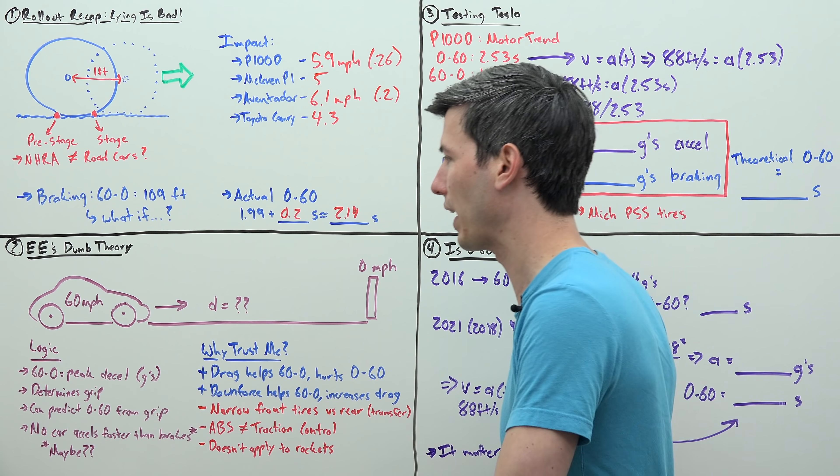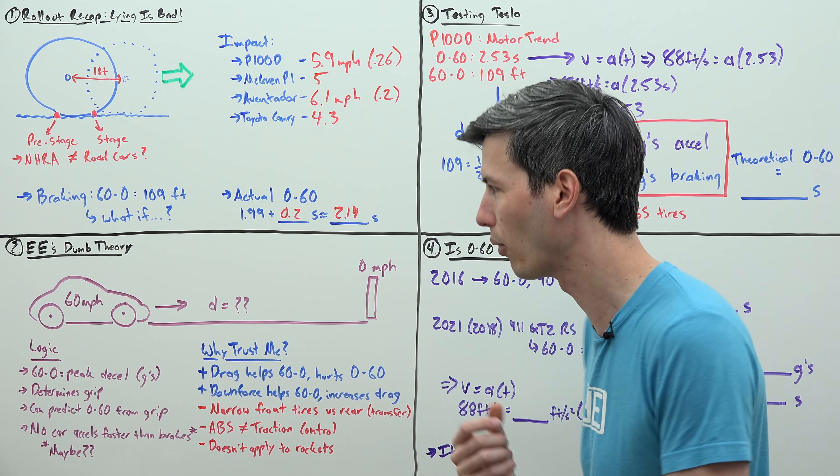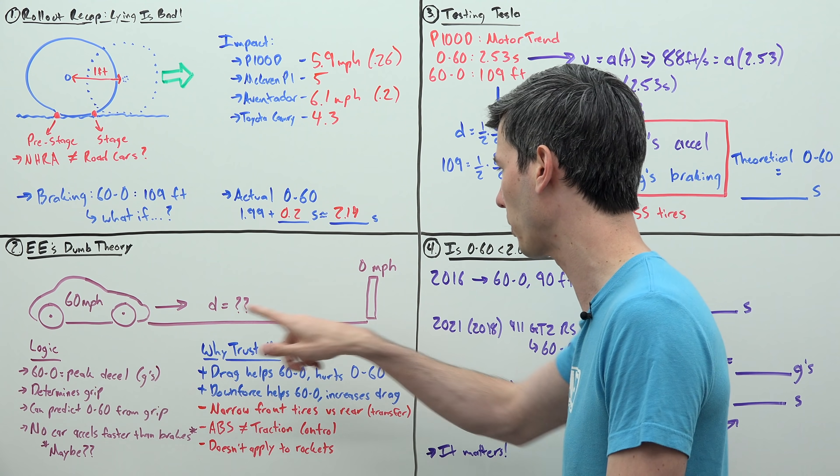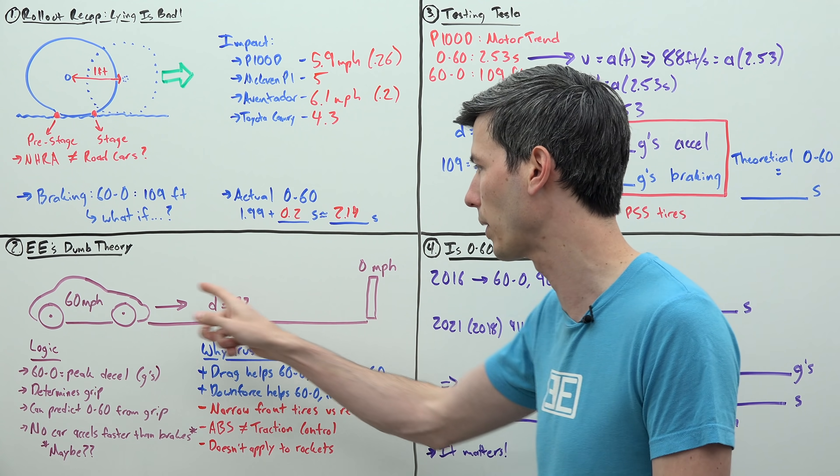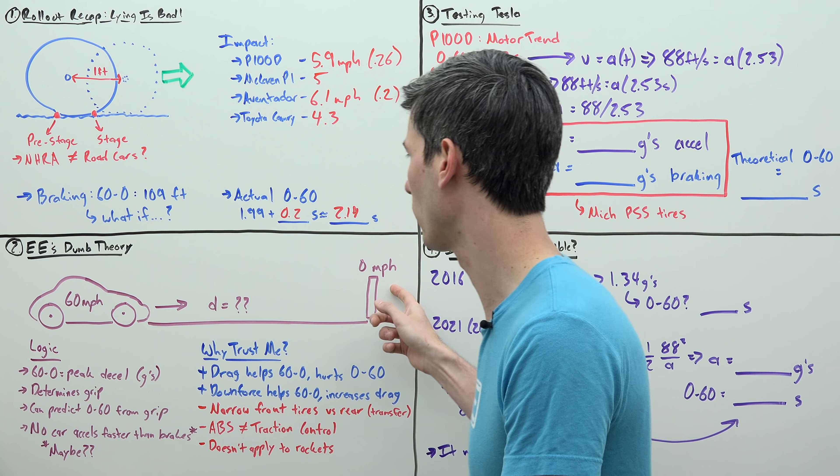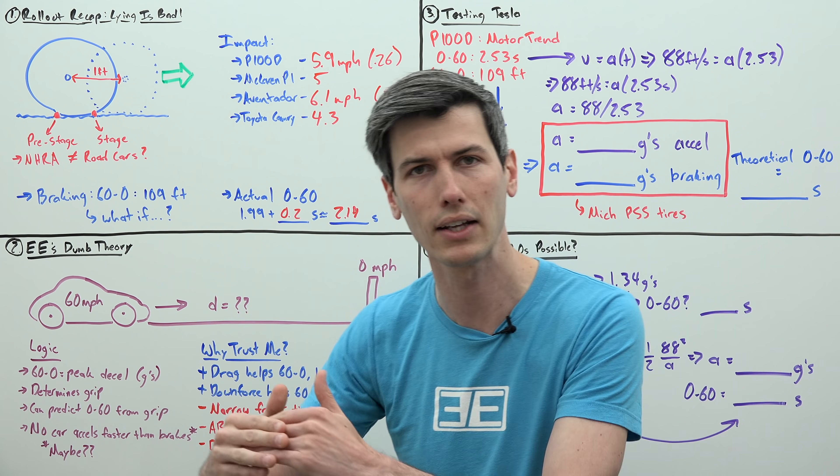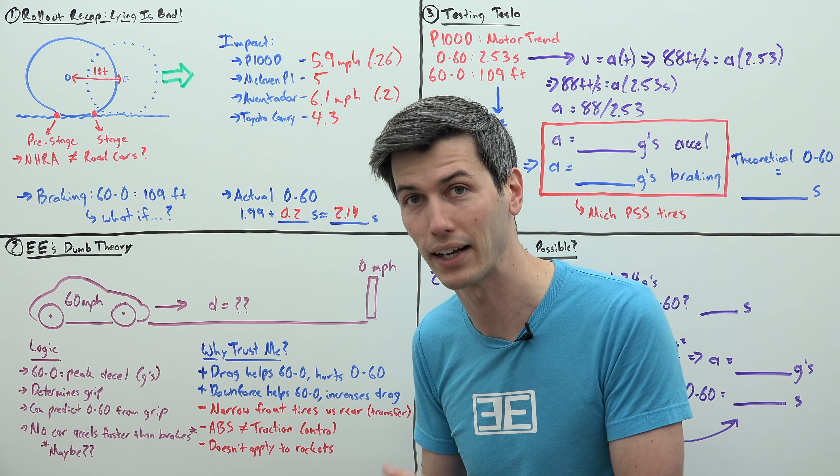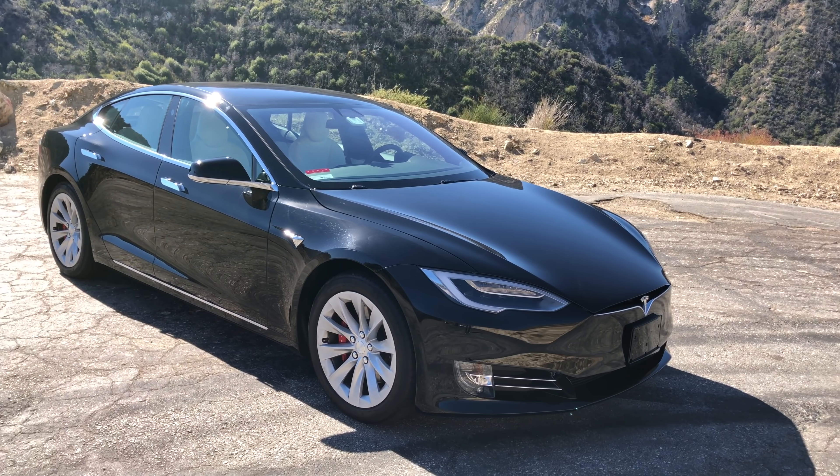For example, looking at that Plaid Plus, it says less than 1.99 seconds. Is it possible for that to be under 2 seconds? Well, what I like to do is look at the braking. The thought is a car cannot accelerate faster than it can brake. The simple logic is if you take a vehicle's braking distance from 60 miles per hour down to 0, you can determine its deceleration rate, its average deceleration from 60 to 0. That gives you essentially what your peak grip is. And if you reverse that and use that to calculate an acceleration using that g-force from 0 to 60, that can give you your theoretical limit of what could my 0-60 be.